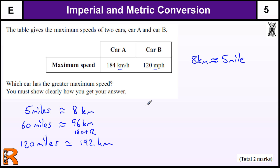So 120 miles per hour is approximately 192 kilometers per hour. Therefore, car B has a greater maximum speed and is faster by 8 kilometers per hour.